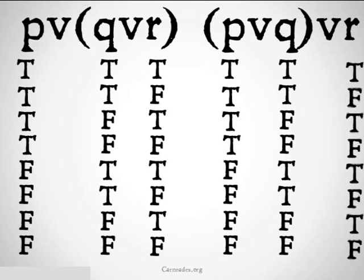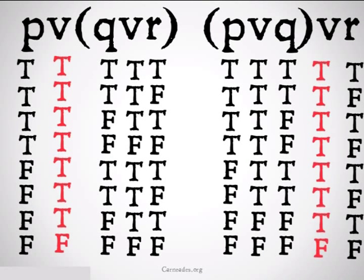If we do it with disjunction, we find the same thing, but in this case, the only time they're false is the last row. But the point is that they are the same truth table for each of these premises, so we can replace them salvo veritate.